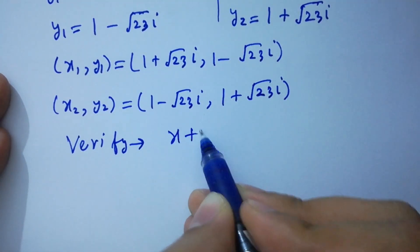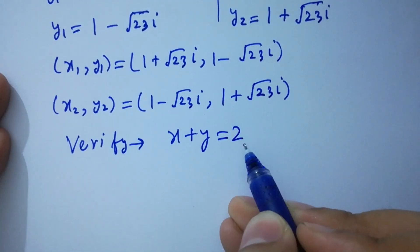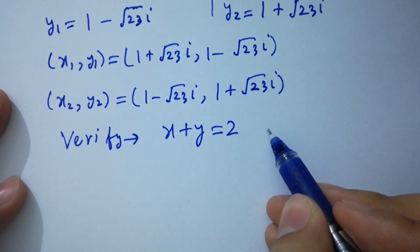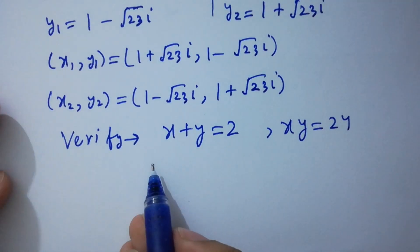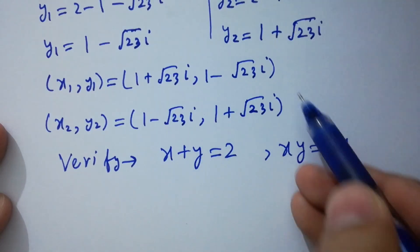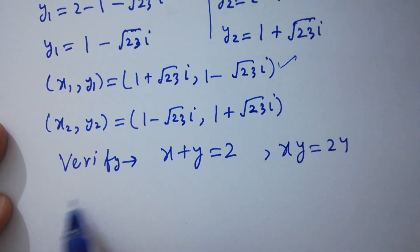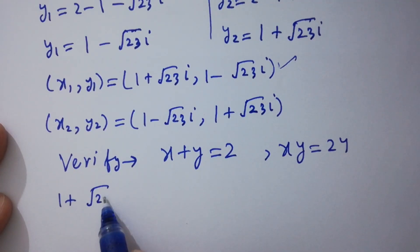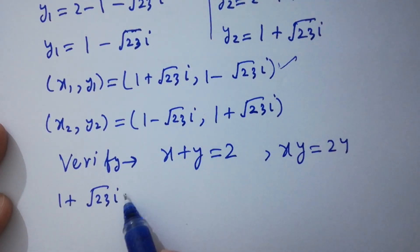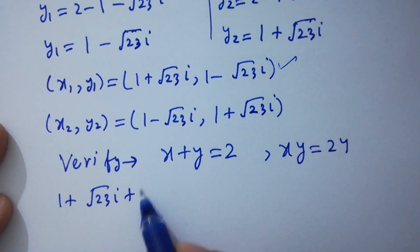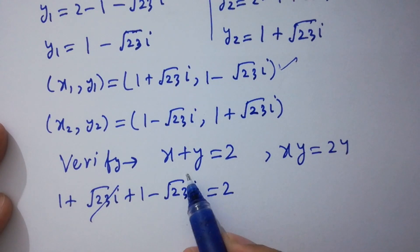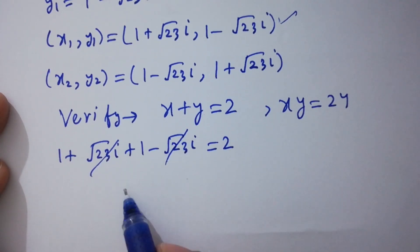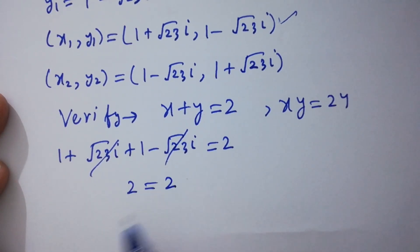Now let's verify. For x plus y equals 2: putting the values of x and y, we have (1 plus square root of 23i) plus (1 minus square root of 23i) equals 2. The square root of 23i terms cancel, leaving 1 plus 1 equals 2, so left hand side equals right hand side.